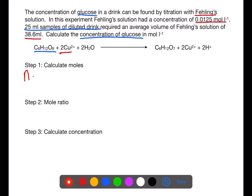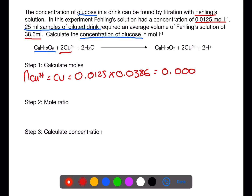The first step in a titration calculation is to calculate moles. We have two pieces of information about the Fehling's solution: the concentration and the volume. Remember to turn the volume into litres by dividing by 1000 first. This gives you a number of moles of Fehling's solution of 0.0004825.